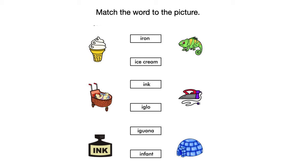Now take a moment to look at the first part. The first word is iron. The second word is ice cream. Next word is ink, igloo, iguana, infant. If you match them up, you can identify what word goes with what picture.